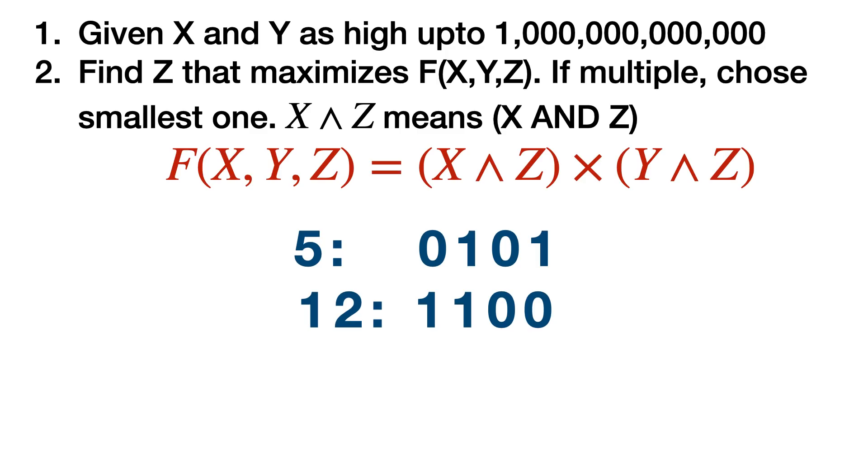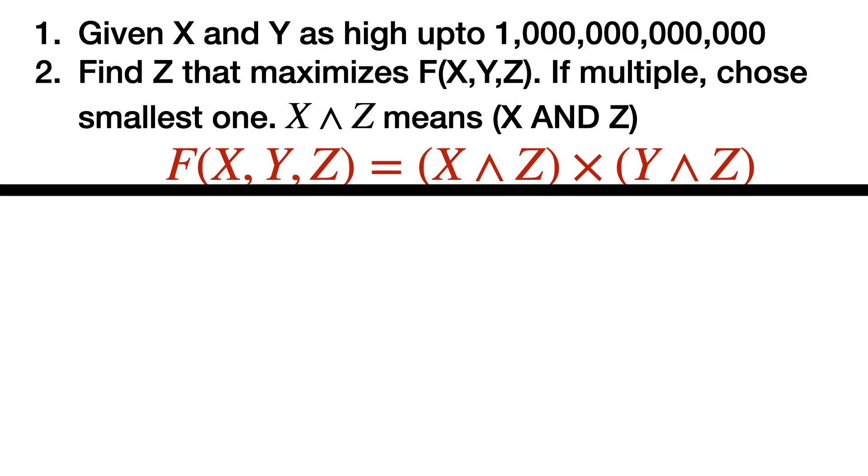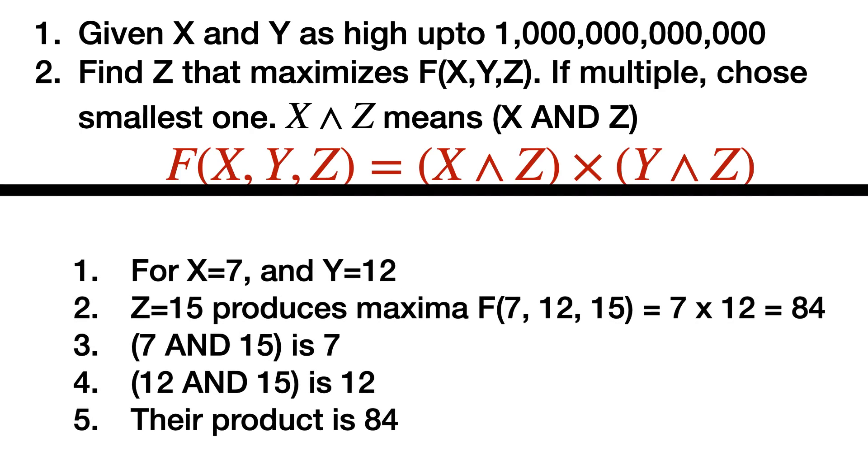So for example, for 5 and 12, this is how the AND will look like. You perform the AND operation on individual bits. AND only results in 1 if both of the bits are turned to 1. If I take an example, let's say X is 7, Y is 12, and the answer for Z will be 15 because that produces the maximum value 84.